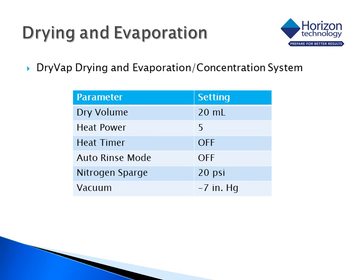The drying and concentration parameters for the Horizon DryVap are listed in this slide. The drying and concentration of samples took approximately 40 minutes to complete six samples. All samples were concentrated down to an endpoint of 1 mL and then transferred to a GC vial. Starting volumes ranged from 40 mL for the HLB disk extracts to 150 mL for the carbon cartridge extracts.